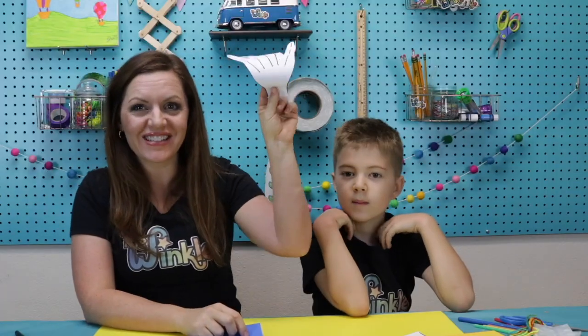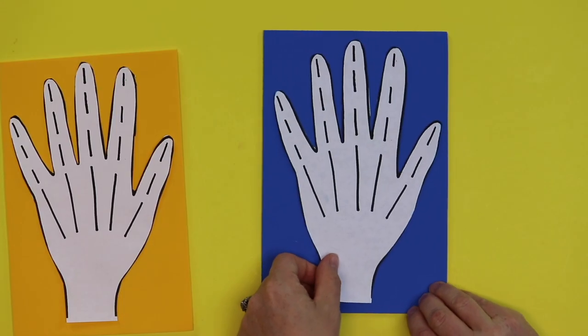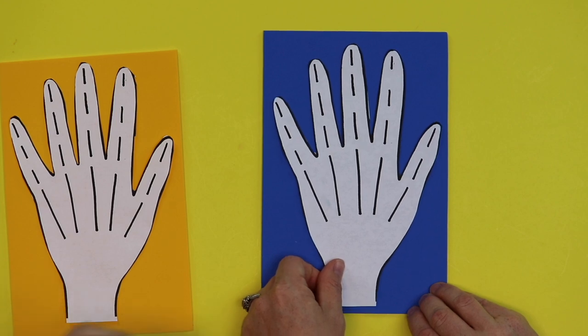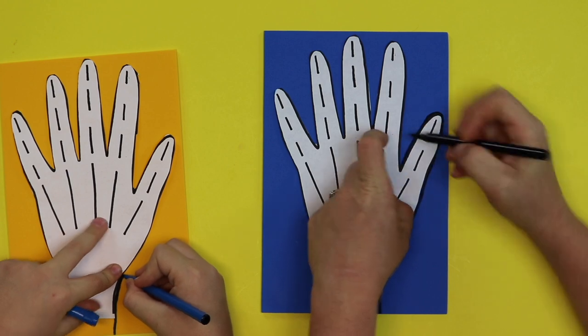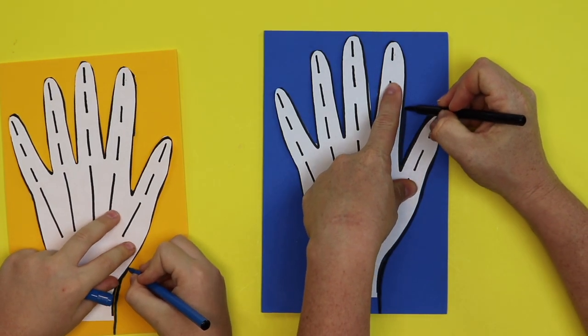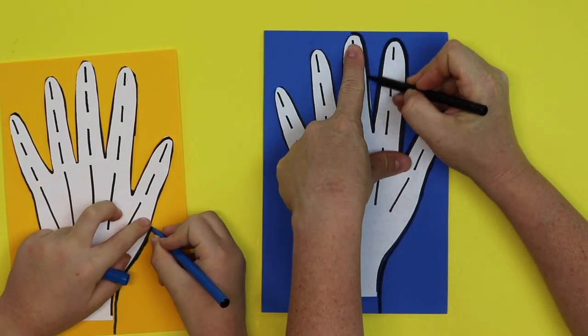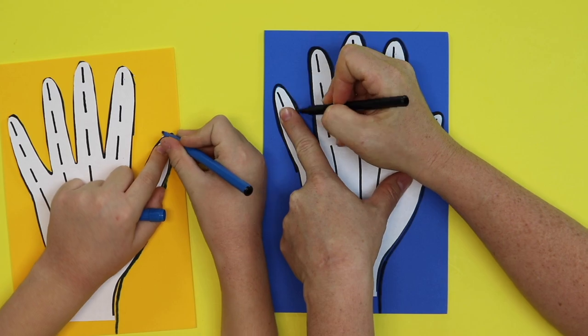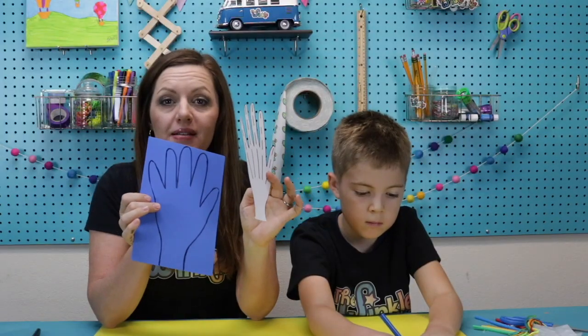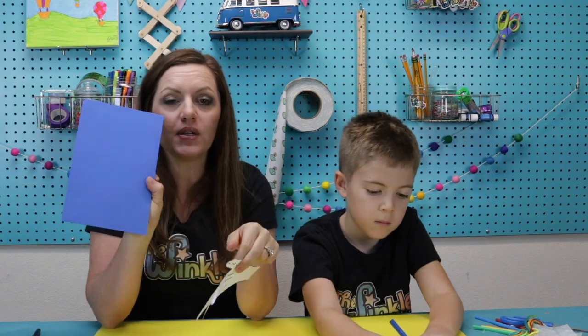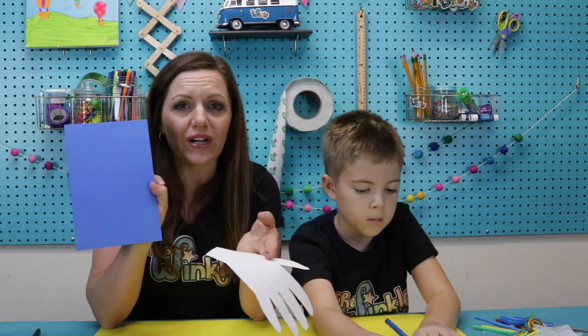Okay we have our hand stencil all cut out and now we're going to trace it on our foam paper. Now line your hand up so it fits on your foam paper just right. As you're tracing hold down your stencil so that your marker doesn't sneak underneath your paper. Sometimes that happens and it can be really frustrating.